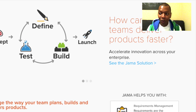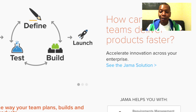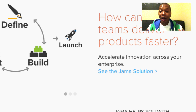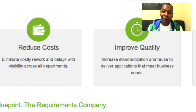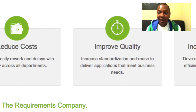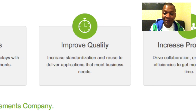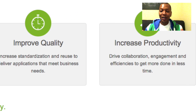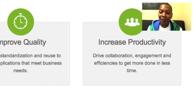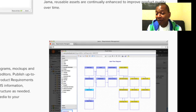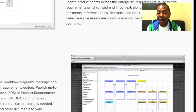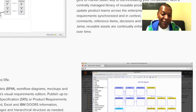Blueprint wins in terms of modeling, creating wireframes, and walking through different states. Whereas with JAMA, I really like their traceability capabilities — the way they visually display things looks better to me. But ultimately it's really a matter of what your organization needs. Blueprint is probably more expensive, though that depends entirely on what kind of negotiating your company does.